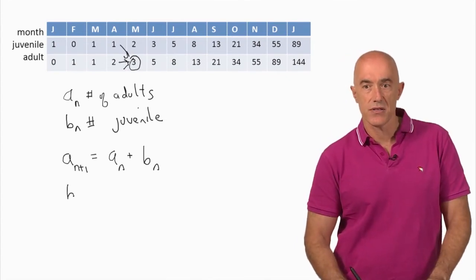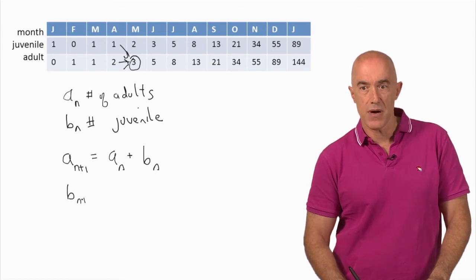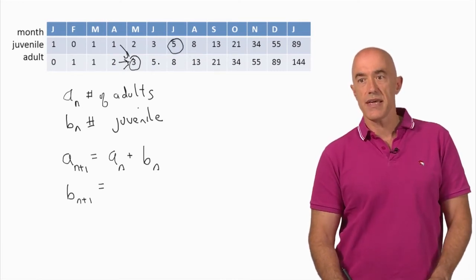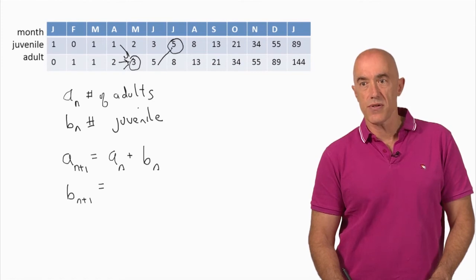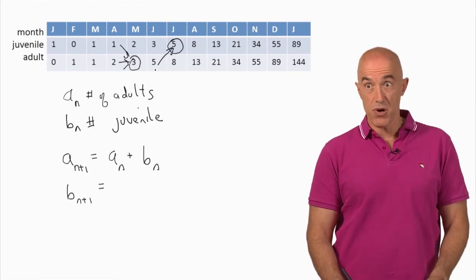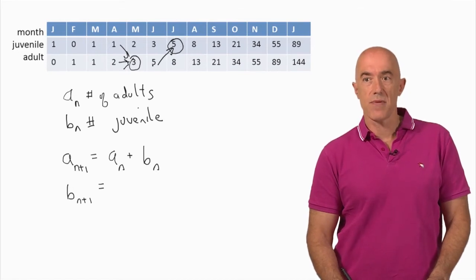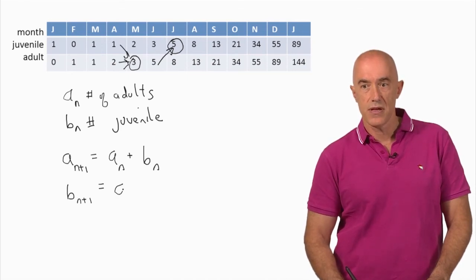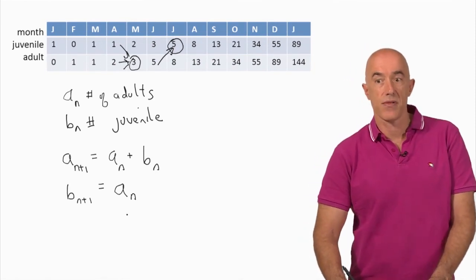What about the juveniles in the n plus 1 month? Where do they come from? They came from the adults giving birth — the females in the adult rabbit pair giving birth. So the number of juveniles in the n plus 1 month is equal to the number of adults in the nth month.